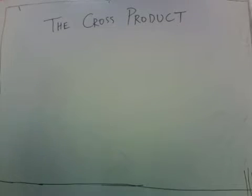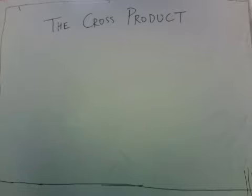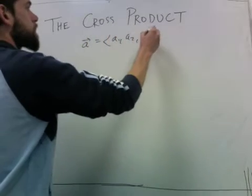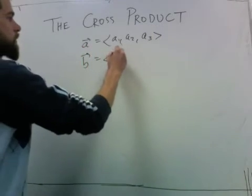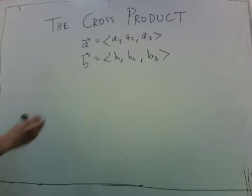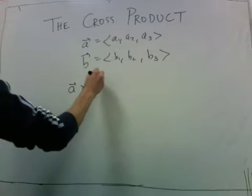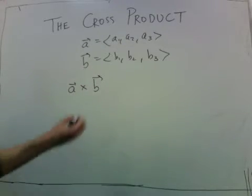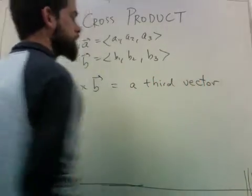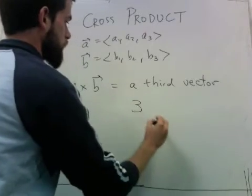This section is about the cross product. The cross product is a way of taking two vectors in three dimensions and multiplying them in some way to get a third vector. Starting with vectors A and B, the cross product gives us a third vector that satisfies three special properties.